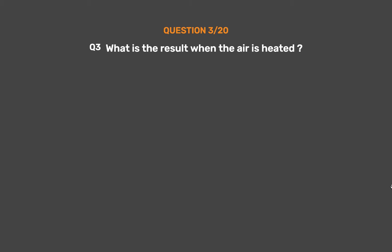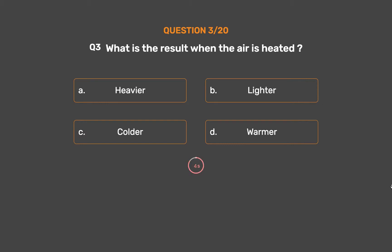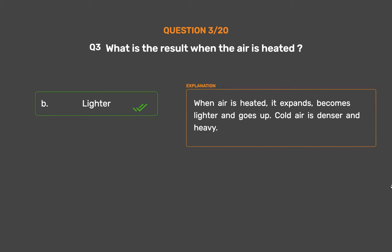Question number 3: What is the result when the air is heated? Option A: Heavier. Option B: Lighter. Option C: Colder. Option D: Warmer. The correct answer is Option B, Lighter. When air is heated, it expands, becomes lighter and goes up. Cold air is denser and heavy.